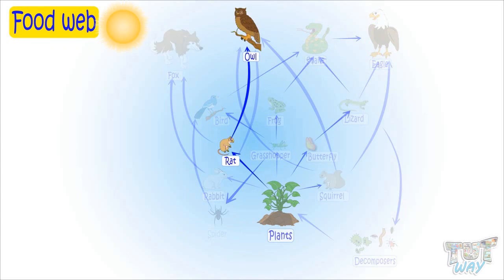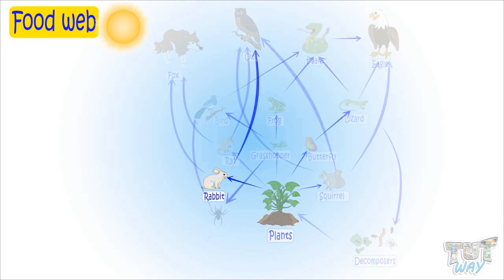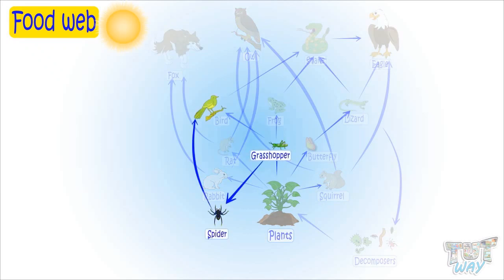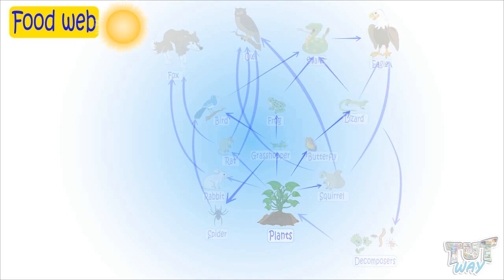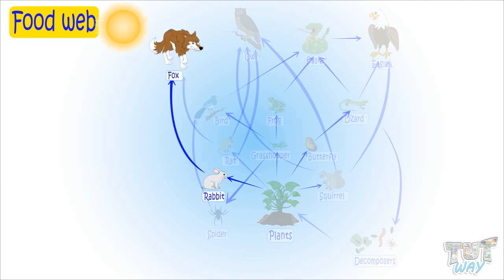So many food chains are there. Next is plants, rats, owl. Plants then squirrels and then owl. Plants then rabbits and then owl. Plants, grasshopper, spider, and then insect-eating birds. Plants, butterfly, lizard, snake, and then eagle. There are still many more: plants, rats, and then foxes; plants, rabbits, and then foxes.